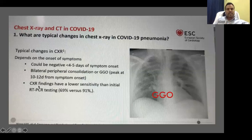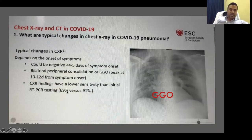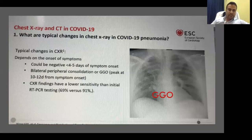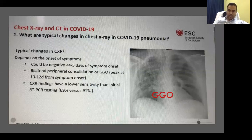Chest X-ray findings have a lower sensitivity than initial RT-PCR testing — 69% versus 91%. The sensitivity or specificity of RT-PCR is around 95%, meaning 5% can be false positive or false negative. By X-ray, we can diagnose only up to 60 to 70%. But GGO — ground glass opacity — is a very important finding.